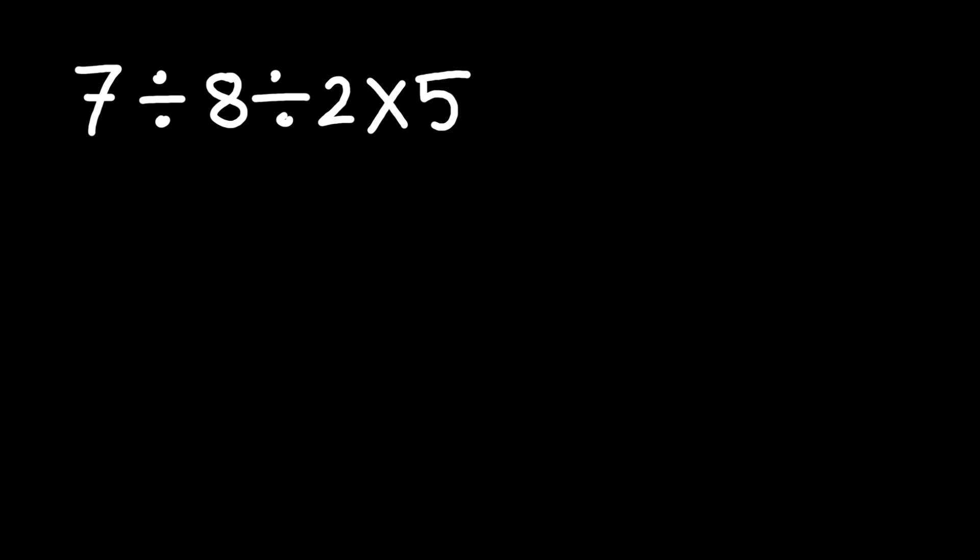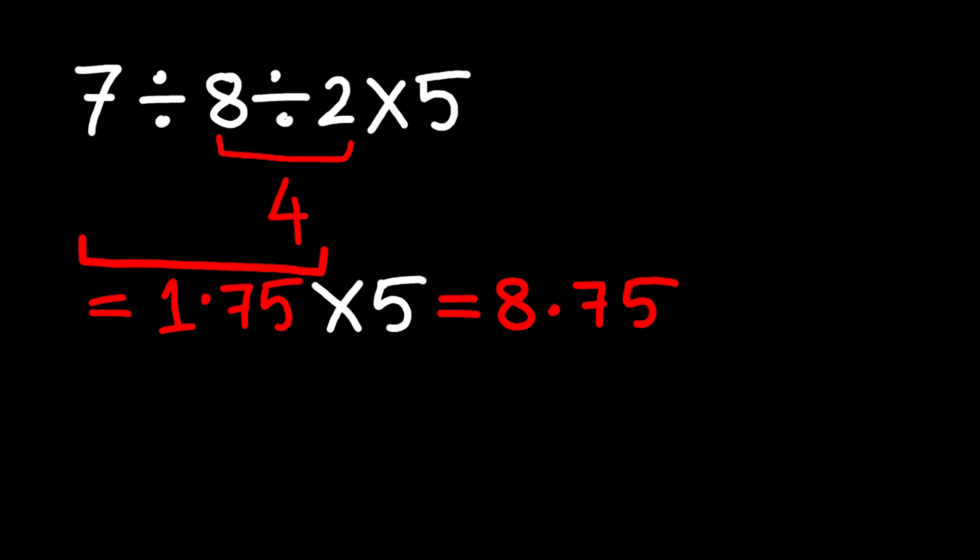Now some people will look at this and try to go in a random order, maybe doing 8 divided by 2 which equals 4 first, then 7 divided by 4 which equals 1.75, then multiply by 5 to get 8.75. But that is not the correct way.